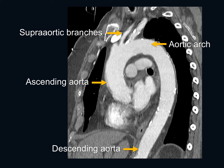Once we acquire those very thin sections, we can reconstruct different organs in different planes. This is an example of a sagittal reconstruction — what we call the candy cane reconstruction — of the thoracic aorta, showing all portions of the thoracic aorta, the supraortic branches, and the descending thoracic aorta diving into the abdomen.